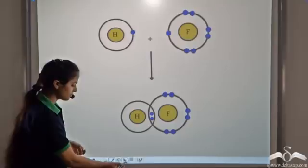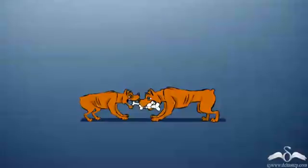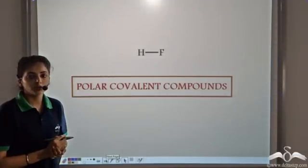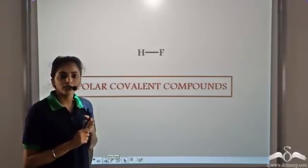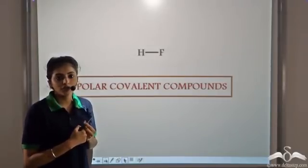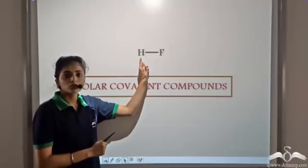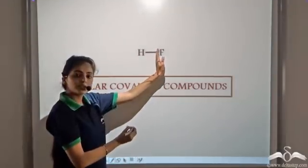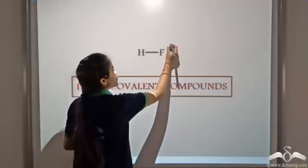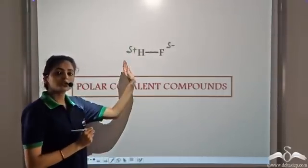If there are two dogs, both of them have one bone each. If they fight, the stronger dog tends to pull the bone more towards himself. Similarly, in case of a covalent compound, when there are two different kinds of atoms, electronegativity determines the sharing. Electronegativity is the tendency to attract the shared pair of electrons. In this case, fluorine has a higher electronegativity than hydrogen, so fluorine tends to attract the shared pair of electrons more towards itself. In doing so, fluorine gets a slightly negative charge and hydrogen gets a slightly positive charge. Since there is a separation of charges,